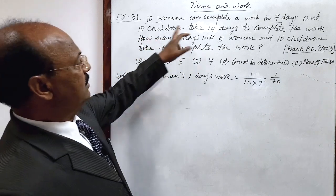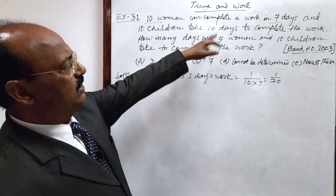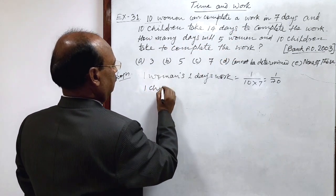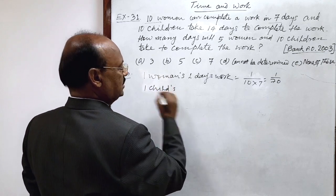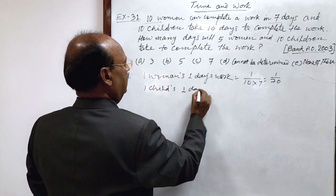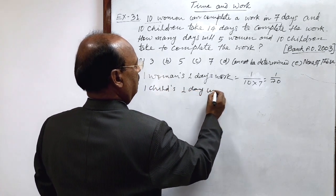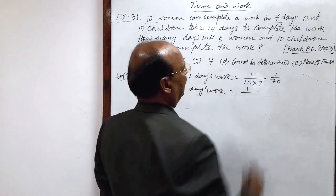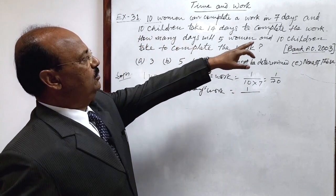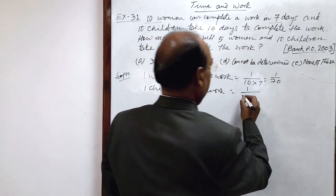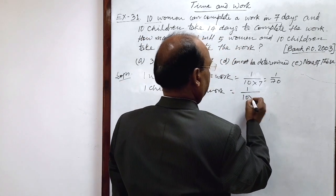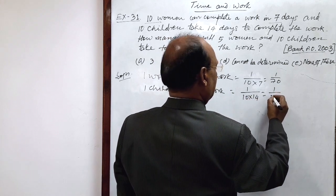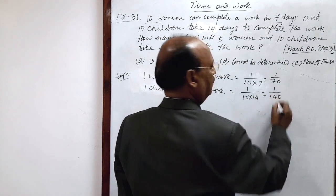Similarly, 10 children take 14 days to complete the work. So, 1 child's 1-day work is equal to 1 upon 10 into 14, which equals 1/140.